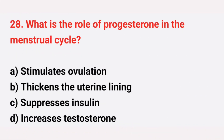Question number 28: What is the role of progesterone in the menstrual cycle? The right answer is option B, it thickens the uterine lining.